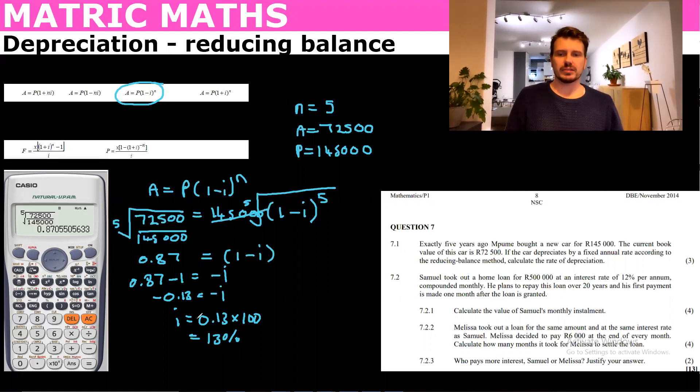So that is the reducing balance method where we're asked to work out the interest rate. Whatever unknown you're given you could just substitute in the formula and then manipulate it. Next I'm going to be doing 7.2 in the next video where we're going to be looking at loans. Subscribe so you get notifications on that video and others. All the best with your studies.